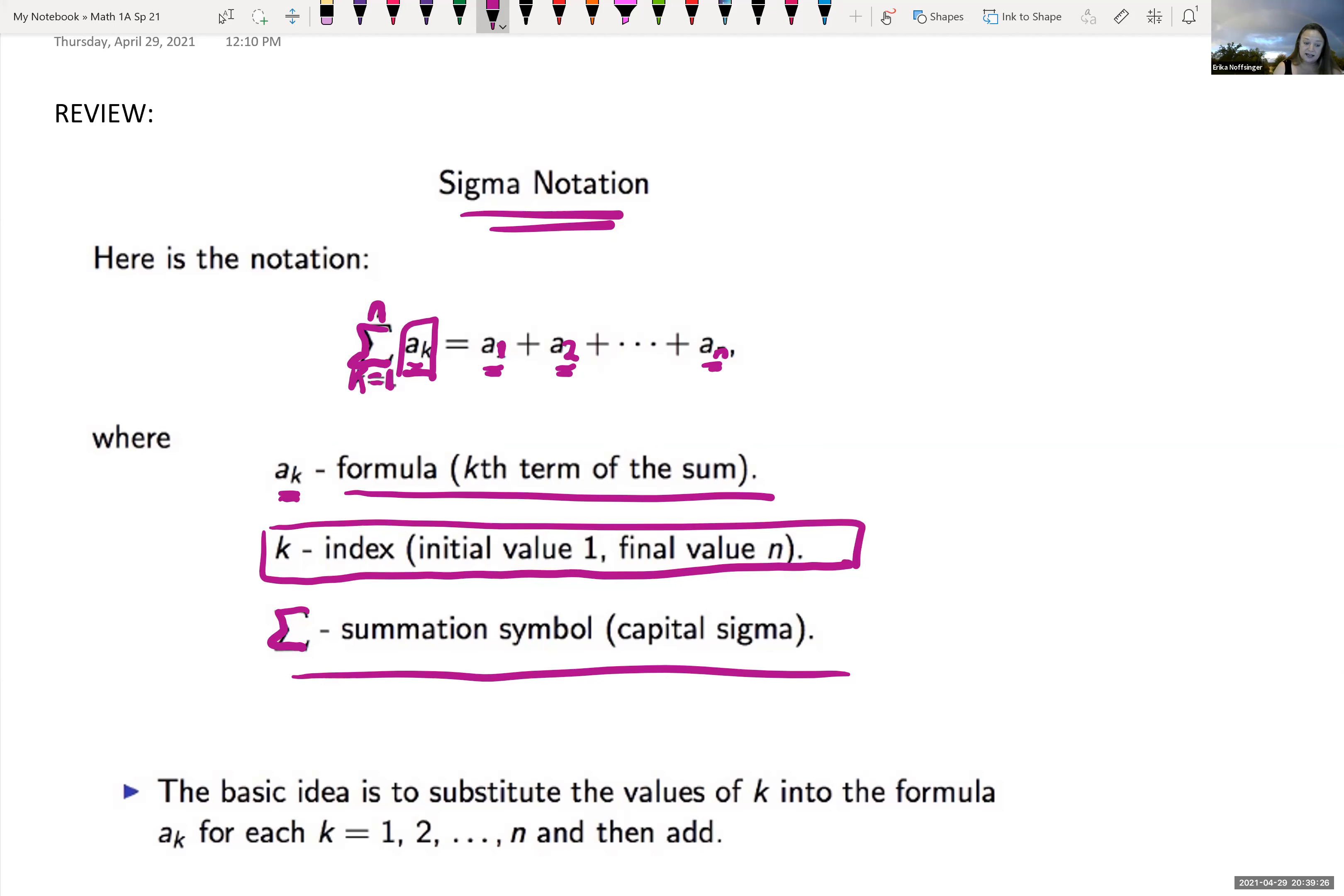So the basic idea is you're just substituting in the value for k into the formula for a sub k for k equals one, two, three, all the way up until we get n and then we sum them together. So that was a quick review of that what summation notation is.